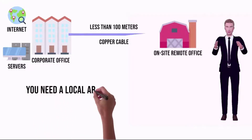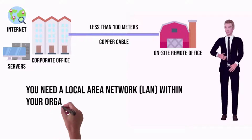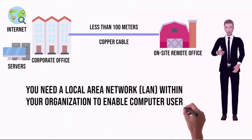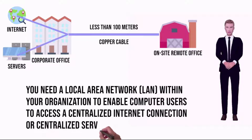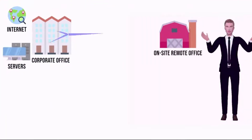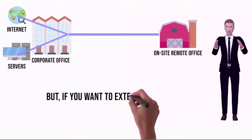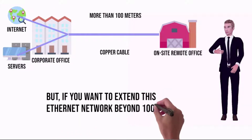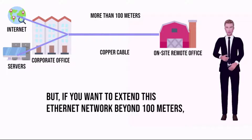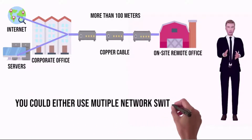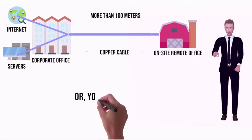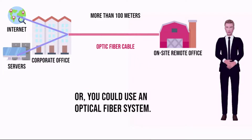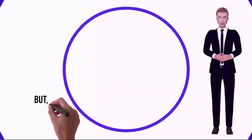You need a local area network within your organization to enable computer users to access a centralized internet connection or centralized server apps. But if you want to extend this ethernet network beyond a hundred meters, you could either use multiple network switches, each of which needs to be powered, or you could use an optical fiber system. But both these options are expensive and in some cases infeasible.